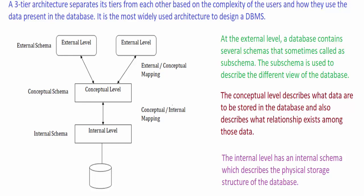Starting from the internal or physical level — schema basically means the structure of the database or the table. The internal level has an internal schema which describes the physical storage structure of the database. It provides the lowest layer of abstraction and describes how the data is actually stored.